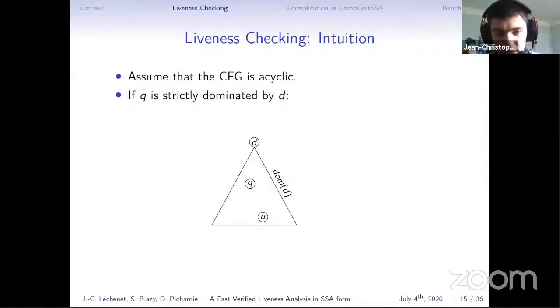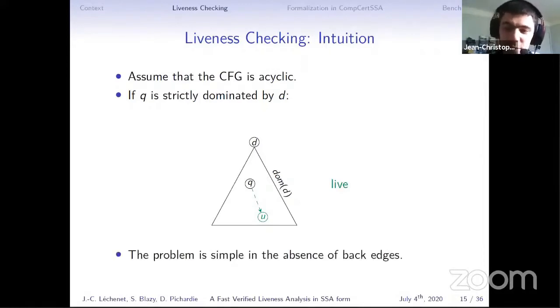Now let us consider the case where Q is strictly dominated by D. We can show, since the graph is acyclic, that if there is a path connecting Q and U, all of its points are dominated by D, and in particular, the path does not contain D, meaning that the path shows that the variable is live at Q. So the conclusion of this slide is that the problem is simple in the absence of back edges. It's just a matter of dominance and reachability information. But as we will see, back edges are treated differently from the other edges.